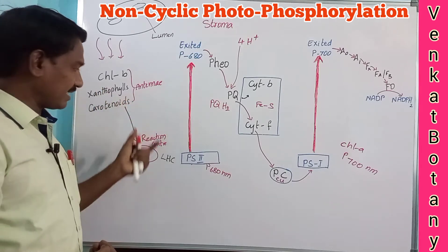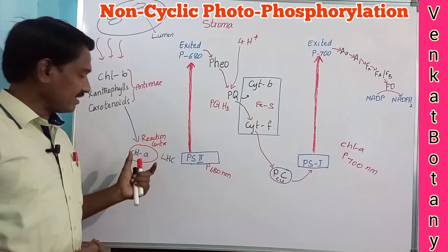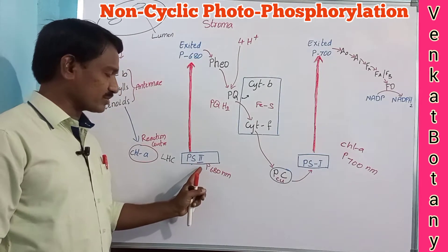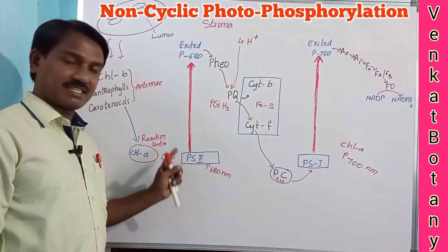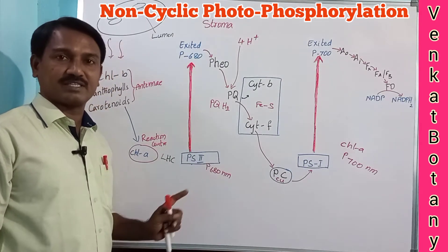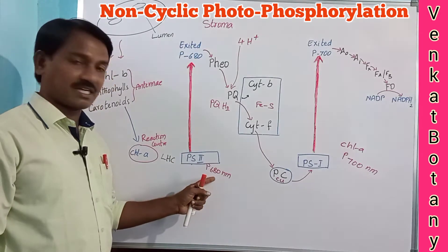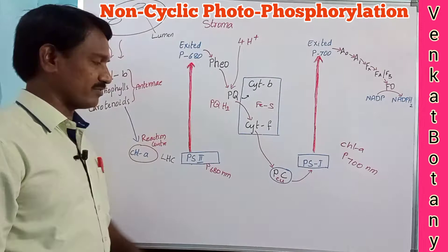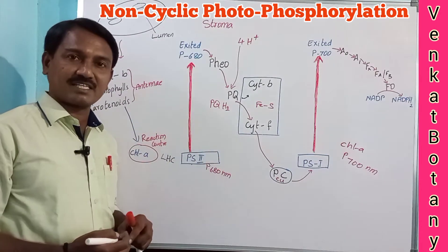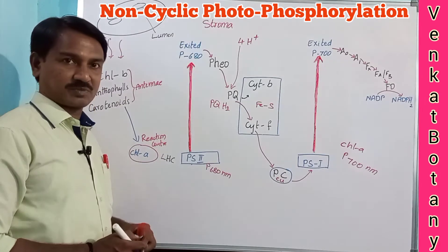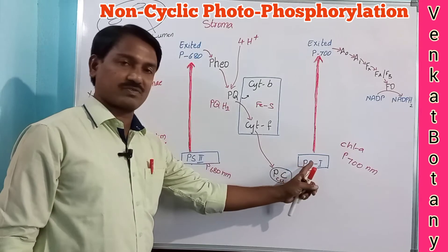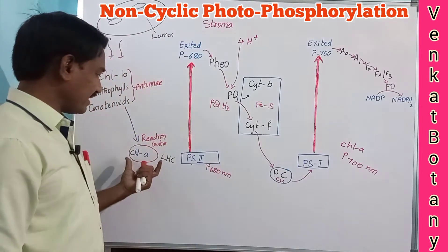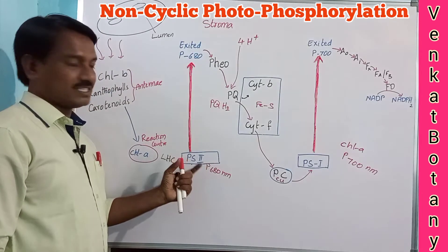The energy is transferred to light harvesting complexes. There are two systems: Photosystem 2 (PS2) and Photosystem 1 (PS1). Chlorophyll a acts as the reaction center, receiving energy from the antenna. PS2 is activated at 680 nanometer wavelength and PS1 at 700 nanometer wavelength. Let us discuss the non-cyclic electron transport system.